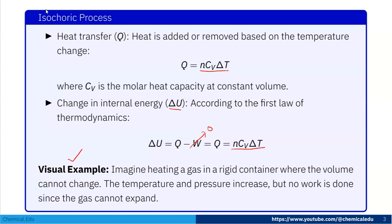As a visual example, imagine heating a gas in a rigid container where the volume cannot change. The temperature and pressure increase, but no work is done since the gas cannot expand. This is an example of an isochoric process.